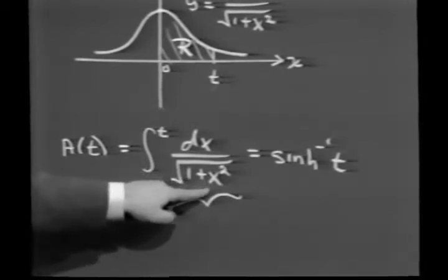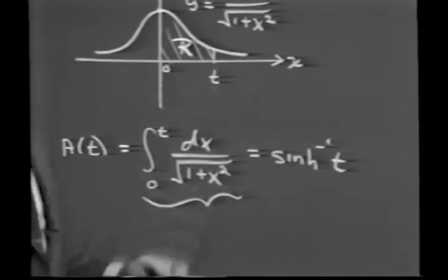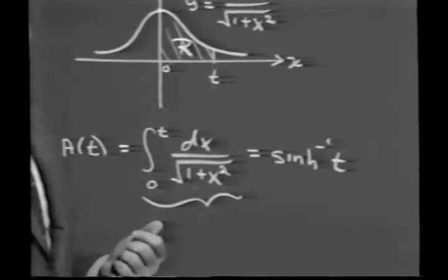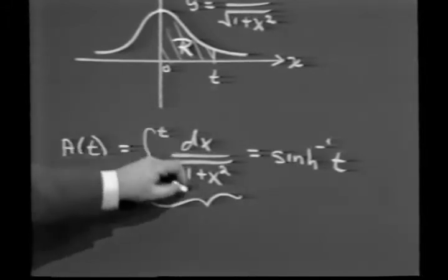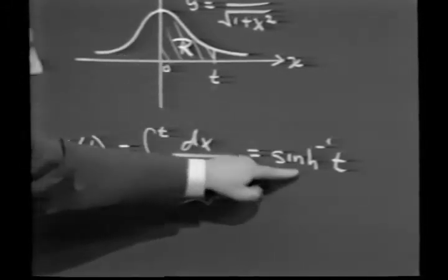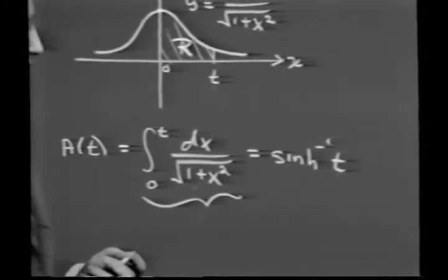But the first fundamental theorem tells us in this particular case that this particular area just turns out to be the inverse hyperbolic sine of t. In other words, notice that a non-trigonometric region has as its answer an inverse hyperbolic trigonometric function.